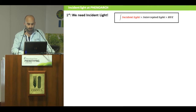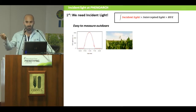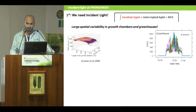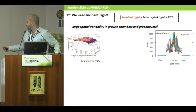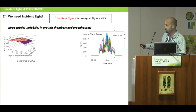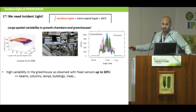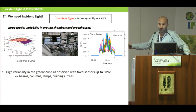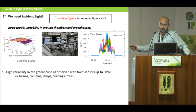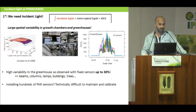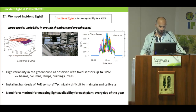The first thing we need is the incident light. While estimating incident light is straightforward in the field, in growth chambers or greenhouses there is large spatial variability of light. Eight PAR sensors in the greenhouse yielded significant variation in available light, due to structures, lamps, shades, columns, beams, surrounding buildings, and even trees blocking light — producing spatial and temporal variability of up to 30%. Installing hundreds of PAR sensors would be impractical to maintain and calibrate.